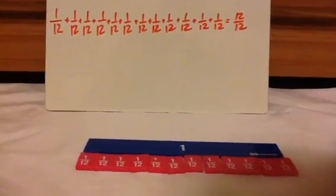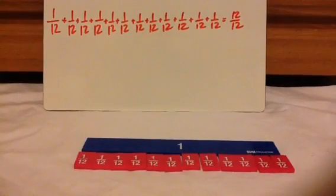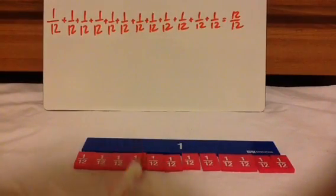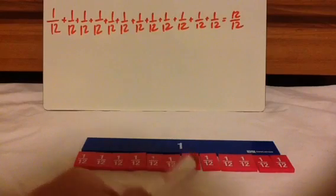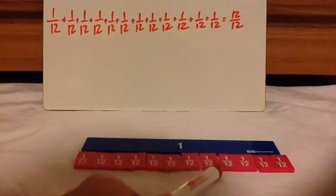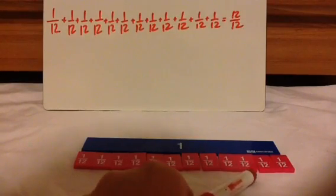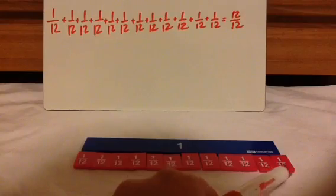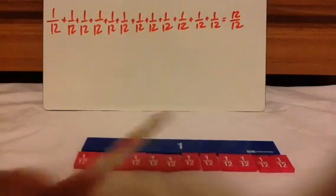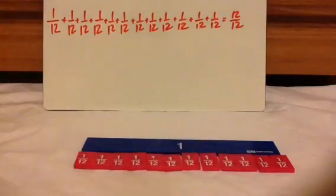And the last one is twelve-twelfths: 1 twelfth plus 1 twelfth — twelve of them — equals 12 twelfths.